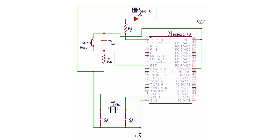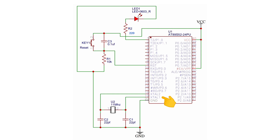In this circuit, one pin of the crystal oscillator is connected to the XTAL1 pin of the AT89S52 microcontroller, and the other pin is connected to the XTAL2 pin. A 22 pF ceramic disc capacitor is connected between XTAL1 and ground, and another 22 pF ceramic disc capacitor is connected between XTAL2 and ground.